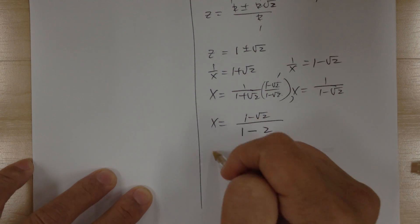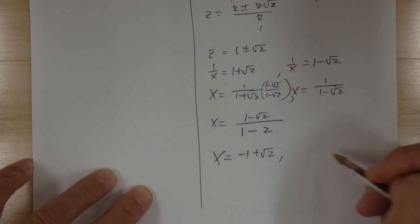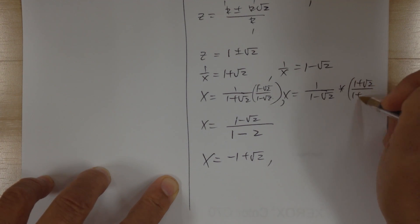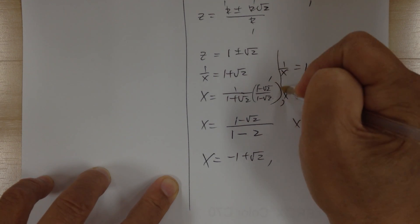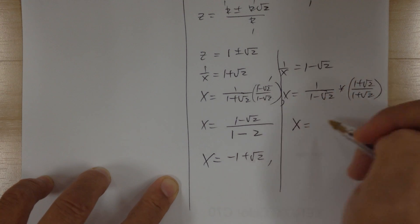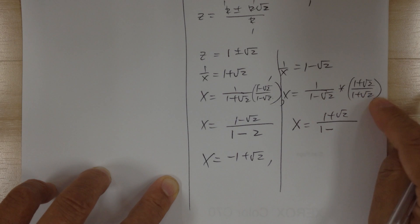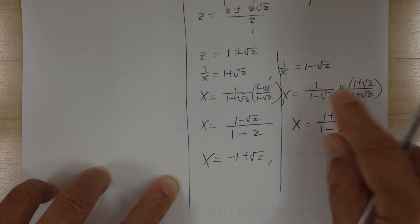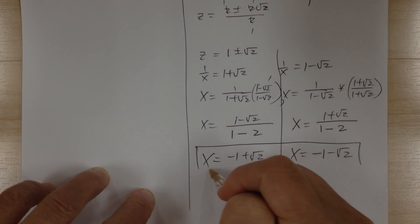For the second fraction, multiply by the conjugate (1 + √2)/(1 + √2). The numerator is 1 + √2, and the denominator is 1 − 2 = −1. Moving the −1 to the top gives x = −1 − √2. So the two answers are x = −1 + √2 and x = −1 − √2.